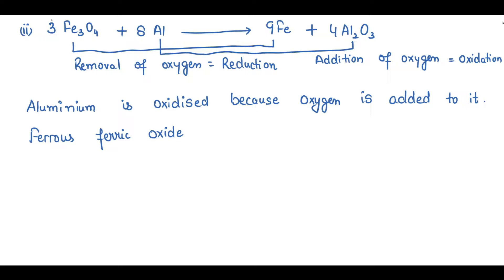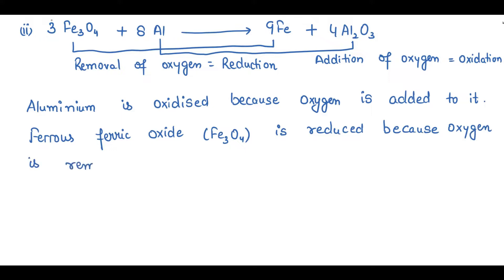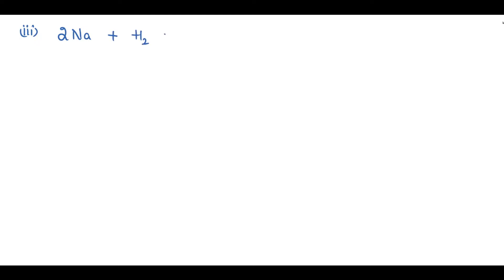Fe₃O₄ (ferrous ferric oxide) is reduced because oxygen is removed from it. Now let's recall: the oxidation state of elements in their atomic state or molecular state is always zero.